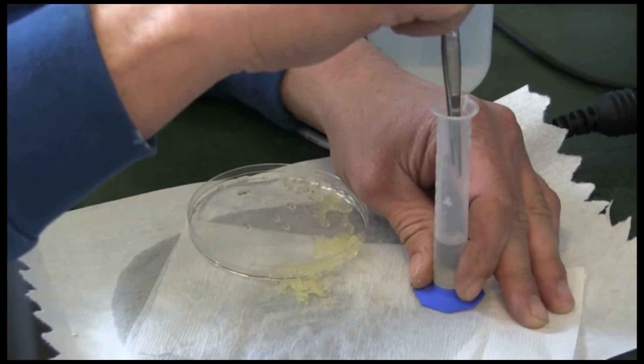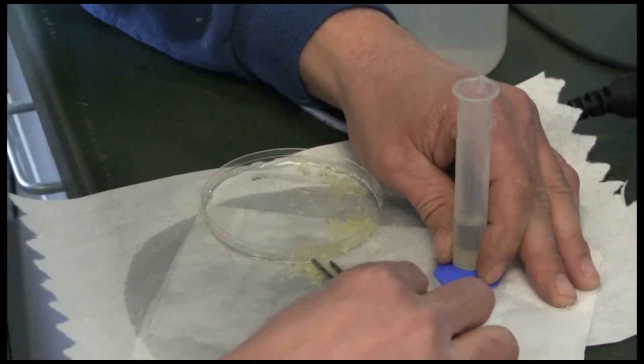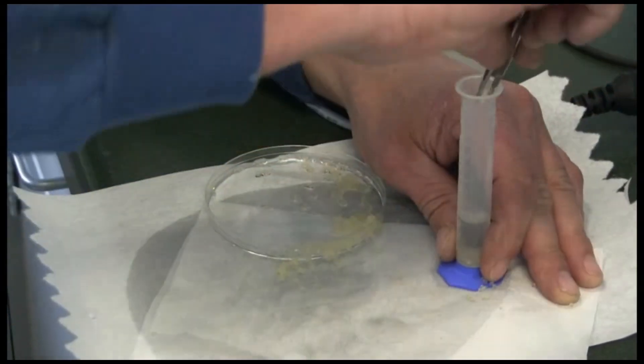Gently begin adding eggs to the water in your cylinder. Do not pop the eggs during this process. Add enough eggs to raise the water level by 1 milliliter.